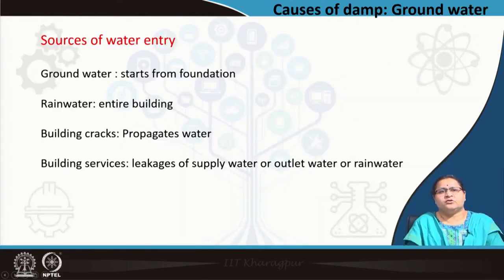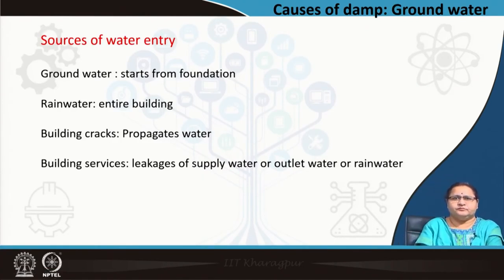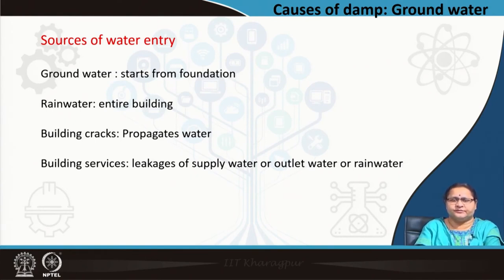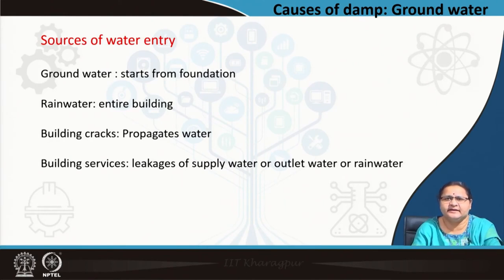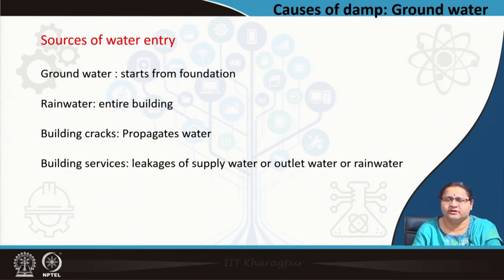Let us come to the sources of water entry. Ground water, as I told you, is one of the most important points which we need to check from the very start of building construction — that is the foundation. Necessary treatments are to be done when dealing with ground water. Next, we have rain water, which the entire building faces. It may be during a particular season, throughout the year, or in a dry area. Based on that, we need to have proper measures taken for rain water.